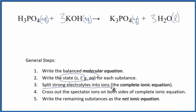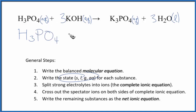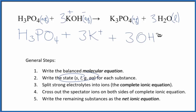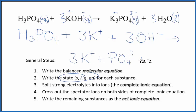Now that we have the states, we can split the strong electrolytes into their ions — that gives us the complete ionic equation. Phosphoric acid is a weak electrolyte, so we're not going to split it up; it stays as H3PO4. For potassium hydroxide, which is a strong base, potassium is in group 1 with a 1+ charge and hydroxide has a 1− charge, so I have 3 potassium ions and 3 hydroxide ions. In the products, potassium has a positive charge and phosphate has a 3− charge, which is why we need 3 potassium ions. So we have 3 K+ ions, plus 1 phosphate ion. We don't split liquids, so we have 3 water molecules. This is our complete ionic equation.